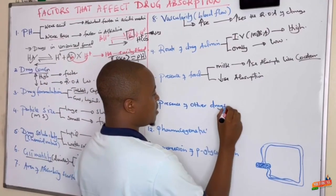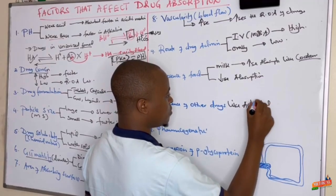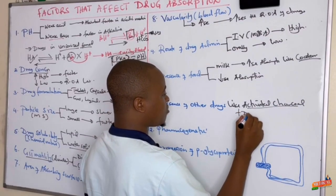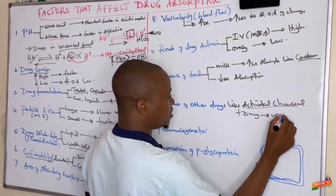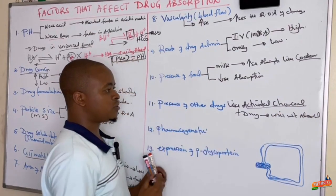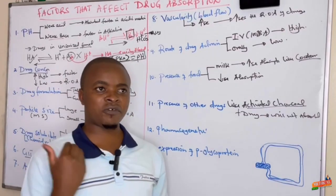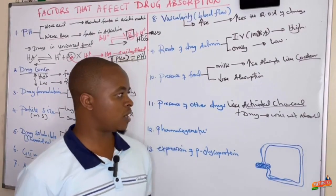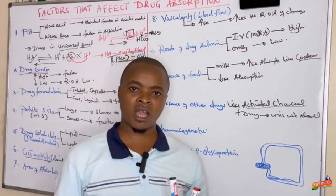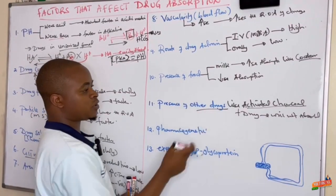The presence of other drugs can also affect absorption. For example, activated charcoal — whenever you have taken activated charcoal and you add another drug, that drug will not be absorbed, because the charcoal prevents its absorption in the GIT. So you should first take activated charcoal, then wait about two hours before taking another drug; taking them in combination means the other drug cannot be absorbed.